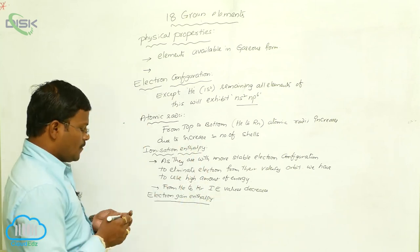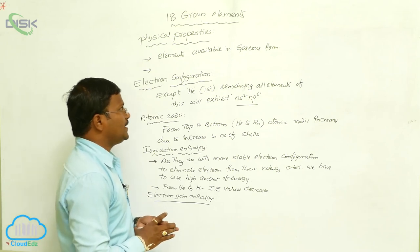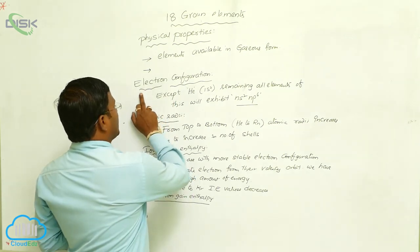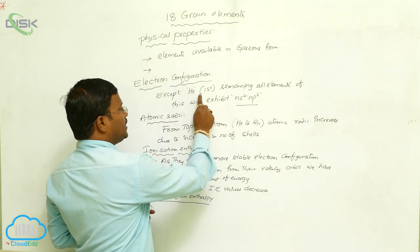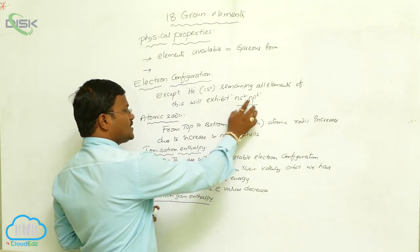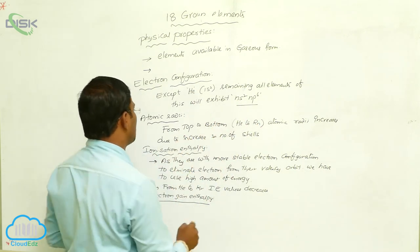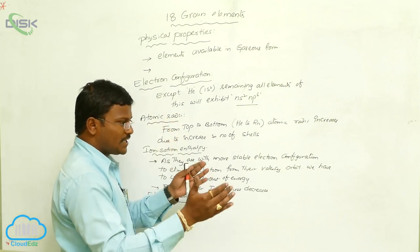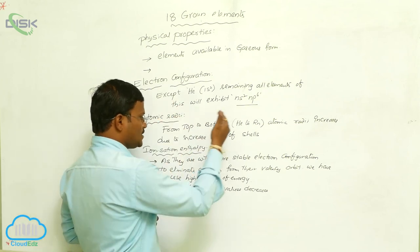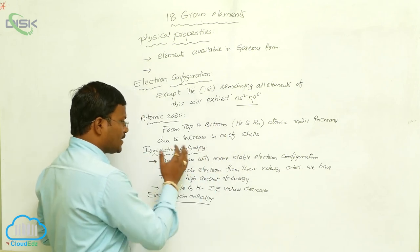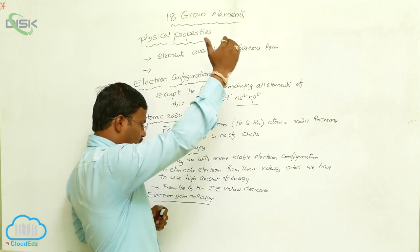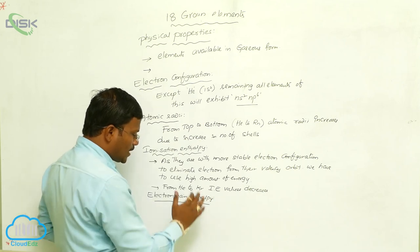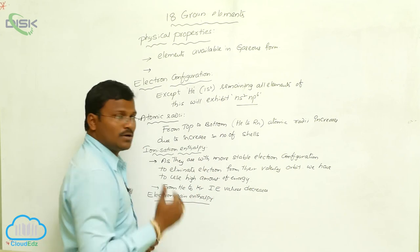To summarize the physical properties of 18th group elements: electron configuration — except Helium, they exhibit NS2 NP6, which is the more stable electron configuration. Atomic radii increases from top to bottom due to increasing number of shells. Ionization enthalpy decreases from Helium to Krypton. Electron gain enthalpy also decreases from Helium to Krypton.